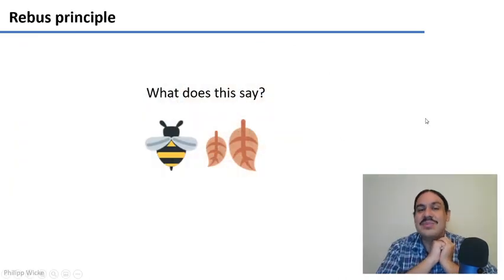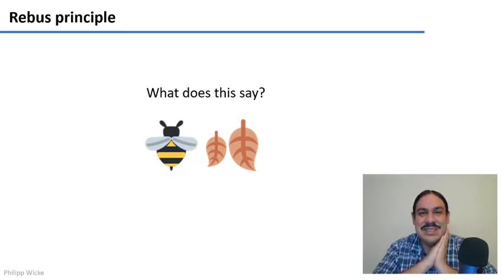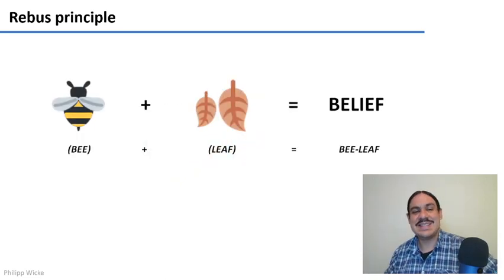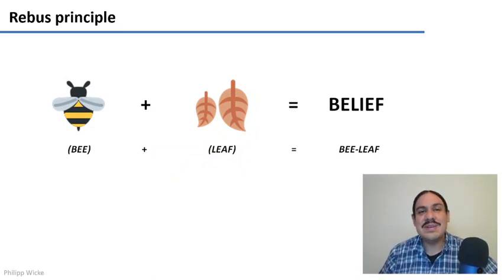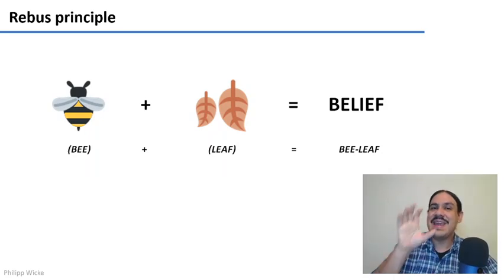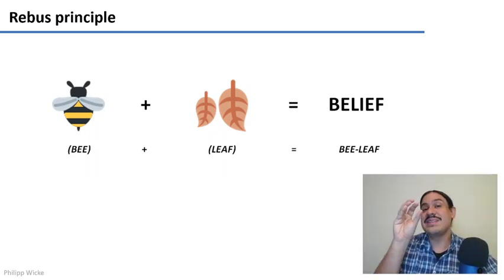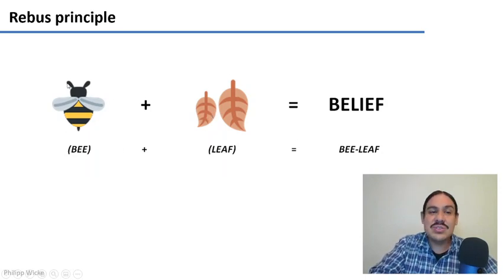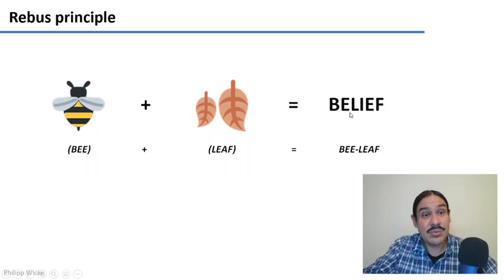Here's a little challenge: what does this say? Try to read it — please pause the video. What would you say if I told you that it says 'believe'? This is called the rebus principle: taking a picture and reinterpreting it as sounds. Even though the word 'believe' has nothing to do with bees or leaves, we use their sounds to transmit a different meaning that has the same sounds.